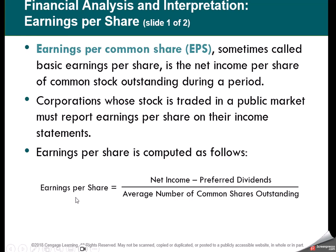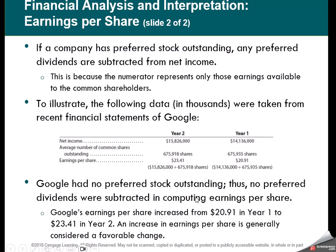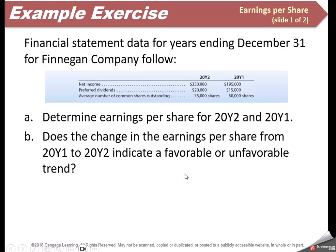We also look at the earnings per share ratio. It's calculated as net income minus preferred dividends, divided by average common shares outstanding. We subtract preferred dividends because preferred stockholders get paid first — earnings per share represents what net income is attributable to the common stockholders. You always want earnings per share to increase — that's a good sign for the company.